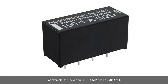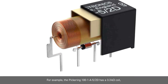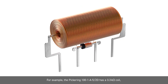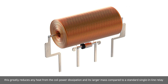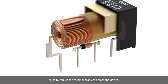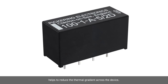For example, the Pickering 100-1-A-5-2D has a 3300 ohm coil. This greatly reduces any heat from the coil power dissipation, and its larger mass compared to a standard single inline relay helps to reduce the thermal gradient across the device.